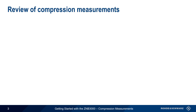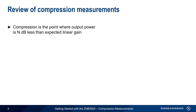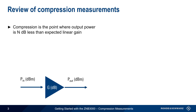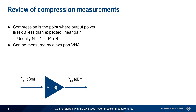Let's start with a brief review of compression measurements. Compression is defined as the point where the actual output power of a device — most often an amplifier — is N dB less than the expected output power, assuming a constant or linear gain. In most cases, N is 1, and compression is commonly quantified as the 1 dB compression point, or P1dB. There are several ways of measuring gain compression, but the most common and most accurate is using a two-port Vector Network Analyzer, or VNA.